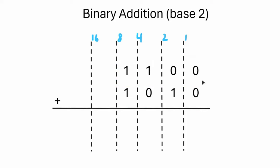So when we say 0 plus 0, well that is 0. Now 0 plus 1 is 1. And 1 plus 0 is 1. Now this is where it gets tricky. Remember we are doing base 2. So 1 plus 1 — we know that's 2. But the largest value that we can put in this column is a 1.